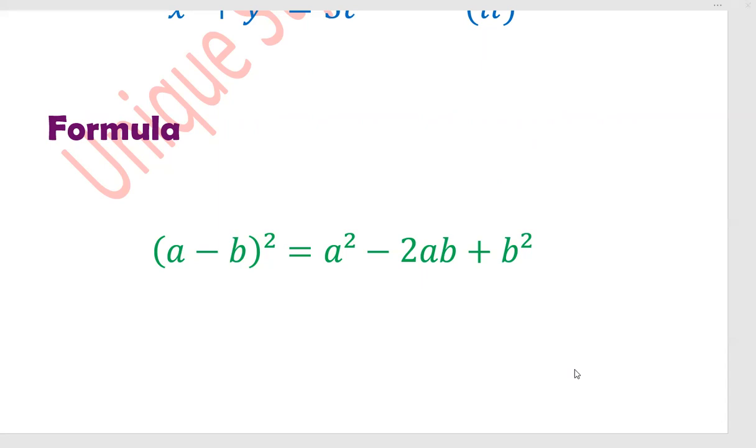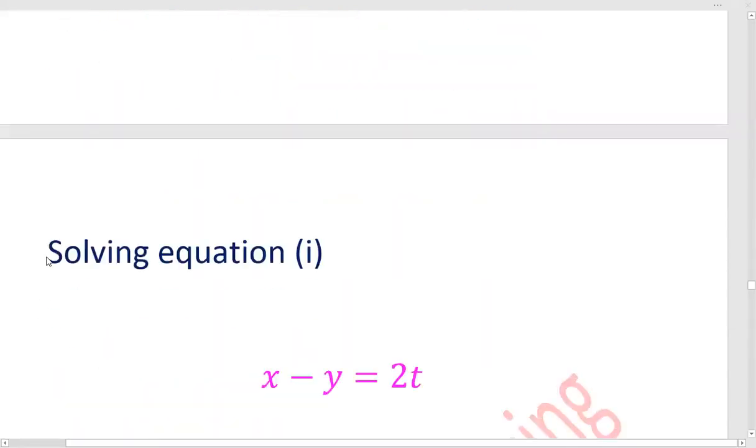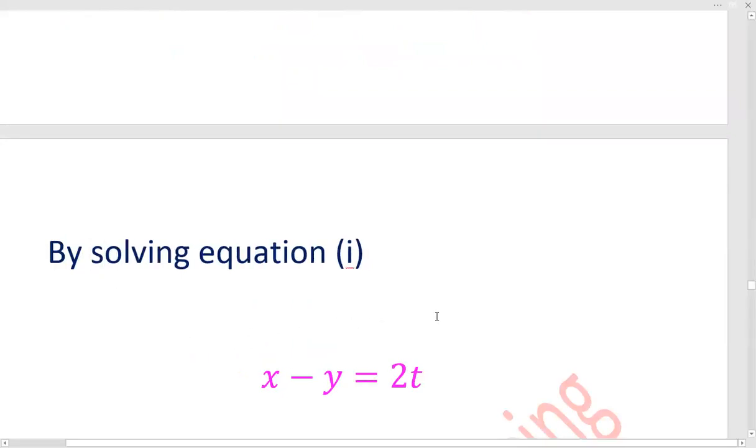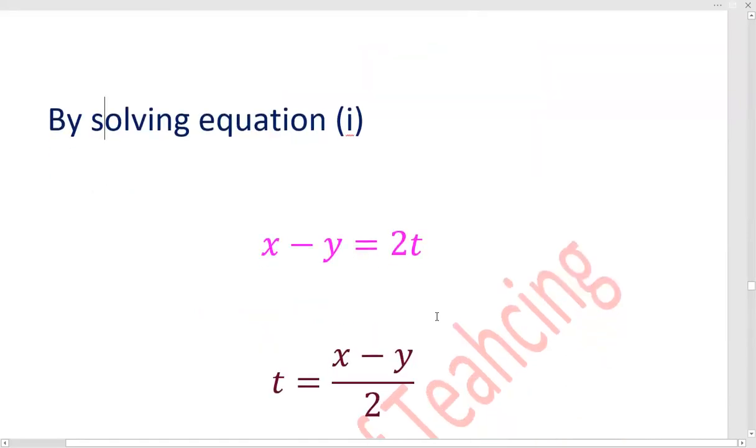I will see you by solving. From equation one, x minus y is equal to 2t. Finding the value of t. Multiply, 2t means t is x minus y divided by 2.